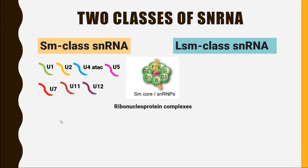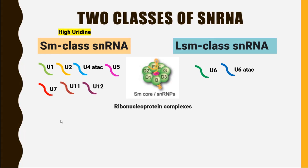The Sm class snRNA also includes U7, U11, and U12. These snRNAs all start with U because they have a high uridine nucleotide content. In the LSM class snRNA, we have U6 and U6 ATAC, where U6 ATAC is a subtype of U6.